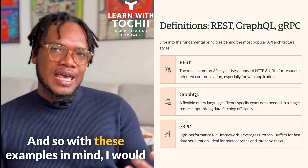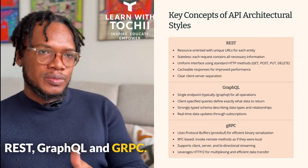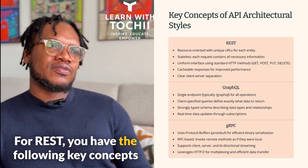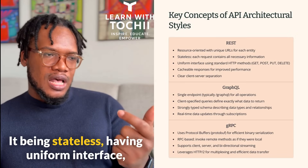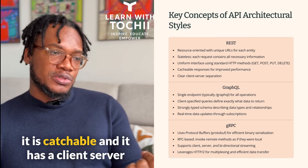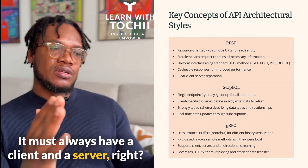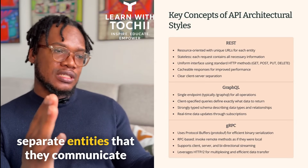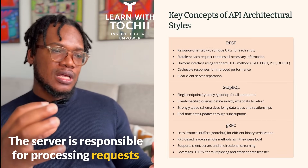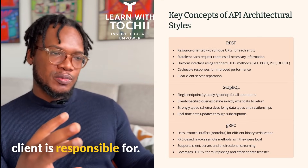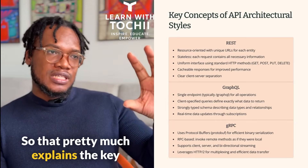With these examples in mind, I'd like to take you through the following key concepts for REST, GraphQL, and gRPC. For REST, the key concepts are: it is resource-oriented, stateless, has a uniform interface, is cacheable, and has a client-server architecture. The client and server are separate entities that communicate using HTTP. The server is responsible for processing requests and returning appropriate responses, and the client is responsible for creating those requests.